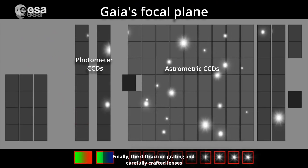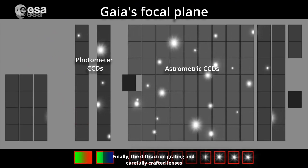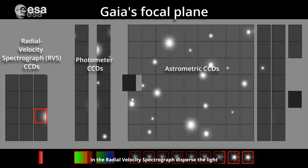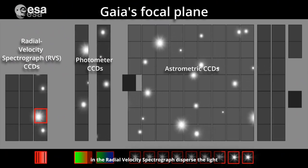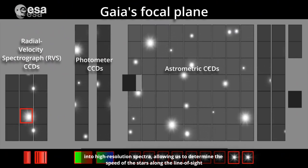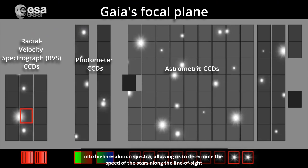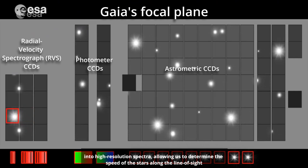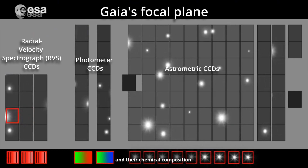Finally, the diffraction grating and carefully crafted lenses in the radial velocity spectrograph disperse the light into high-resolution spectra, allowing us to determine the speed of the stars along the line of sight and their chemical composition.